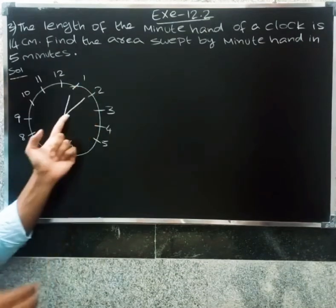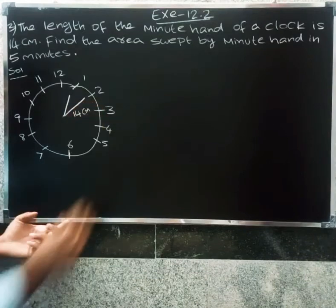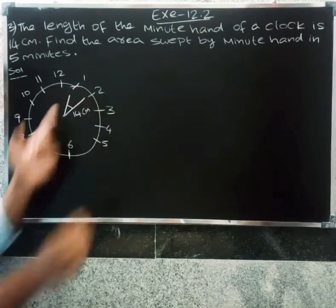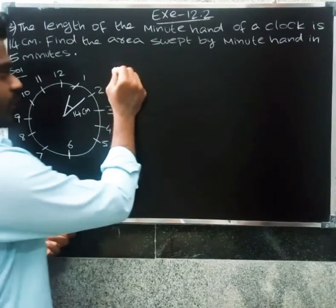So the minute hand radius is 14 centimeters. Find the area swept in 5 minutes. For 5 minutes, let's start with one hour.